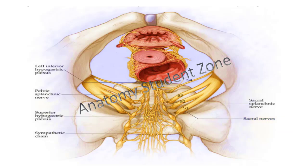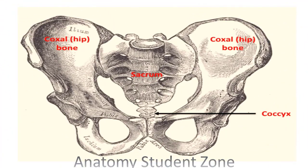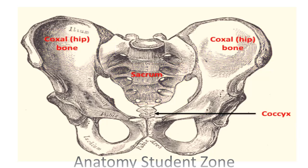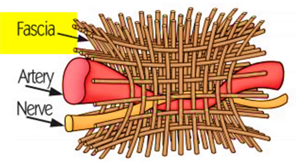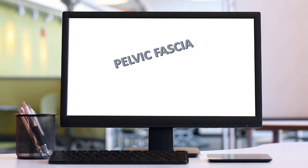The pelvis is the inferior-most part of the trunk, located between the abdomen and the thigh. The pelvic region includes the pelvic girdle and perineum. The pelvic girdle is formed by the two hip bones together with the sacrum and coccyx. Fascia is a thin casing of connective tissue that surrounds and holds every organ, blood vessel, bone, nerve fiber, and muscle in place.